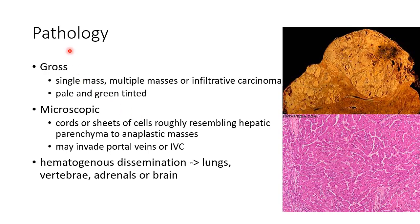Now let us see about the pathology of hepatocellular carcinoma. The gross specimen may show a single mass, multiple masses, or infiltrative carcinoma. This picture shows an autopsy specimen of hepatocellular carcinoma. The liver may be pale and green tinted.